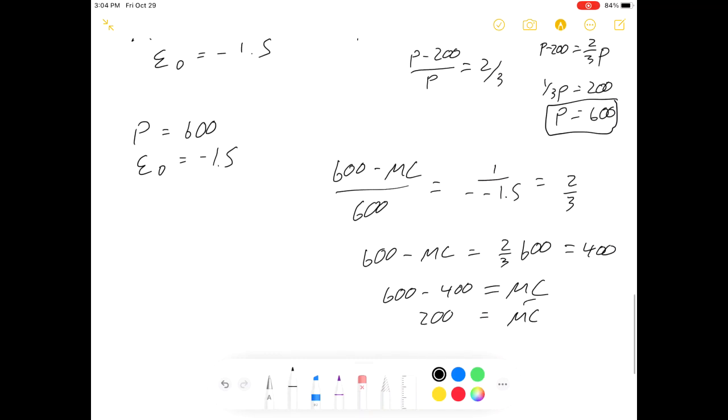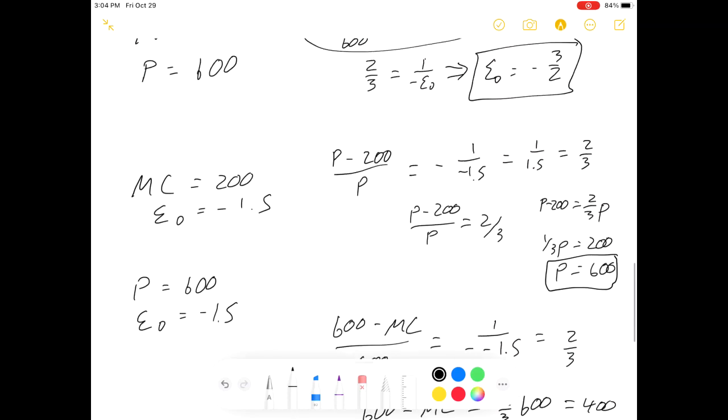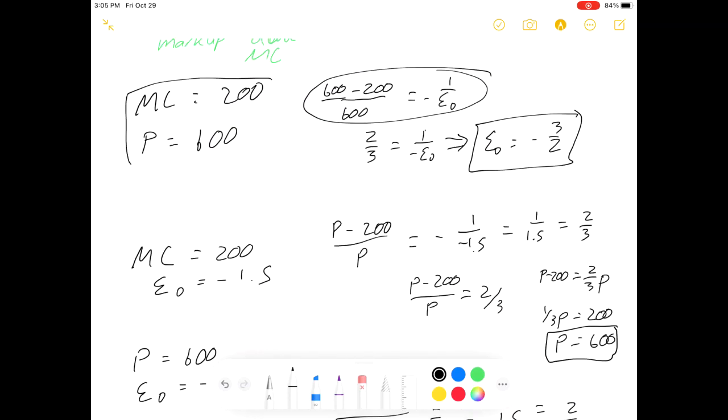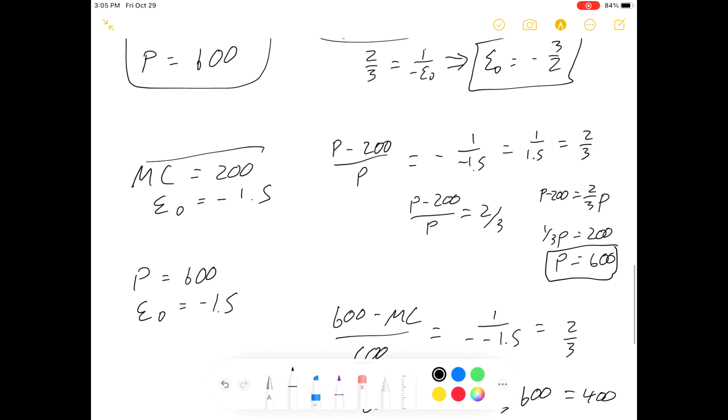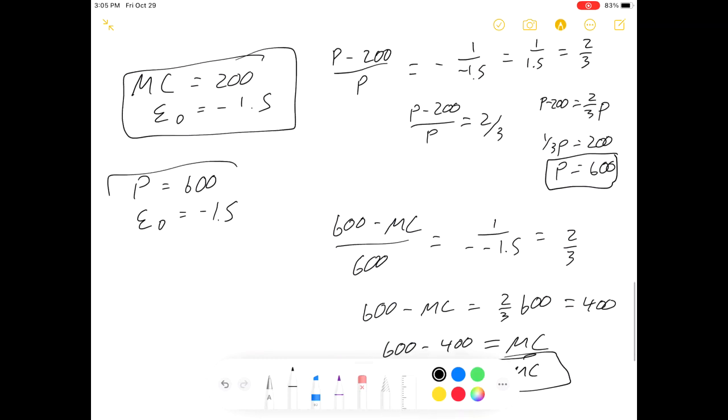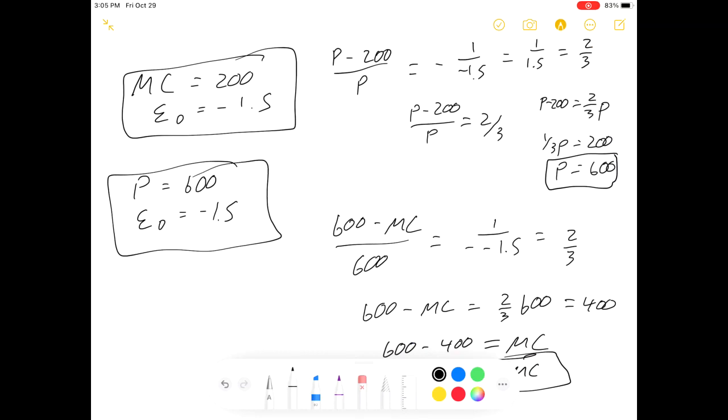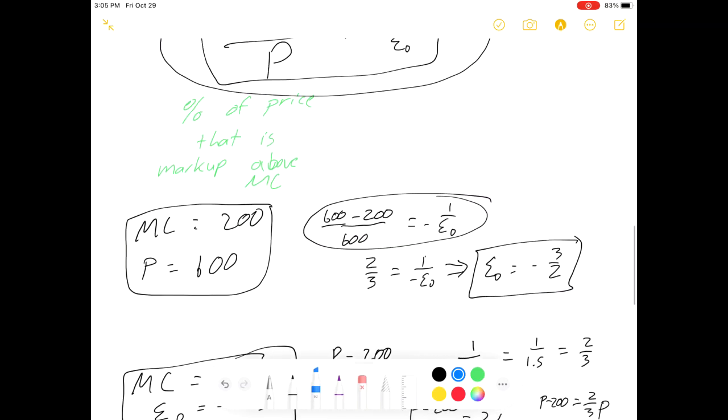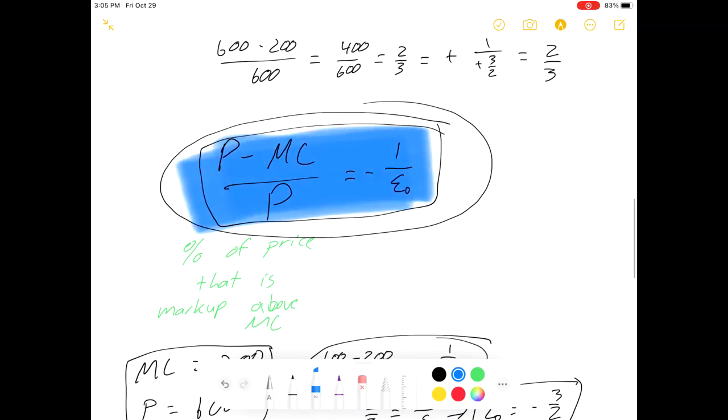All right, so we just verified it from three different angles. If we had marginal cost and price, we can solve for elasticity. If we have marginal cost and elasticity, we can solve for price. If we have price and elasticity, we can solve for marginal cost. In every case, what did we do? We plugged in the information we knew into this guy. So I hope that's helpful to you. If not, too bad. But good luck anyway. Thanks for watching, guys. See you next time.